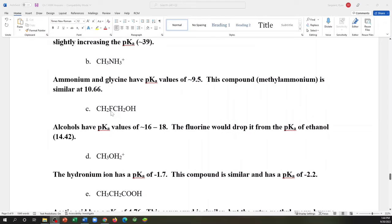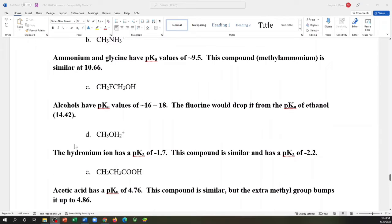The presence of the fluorine will significantly withdraw electron density. Halogens are electron withdrawing groups. That means they pull electron density towards themselves and away from the acidic hydrogen. This weakens the bond between the oxygen and the hydrogen and makes it more acidic. And your pKa is 14.42, which is quite low for an alcohol. If you had more fluorines on there, you would expect it to get even lower.